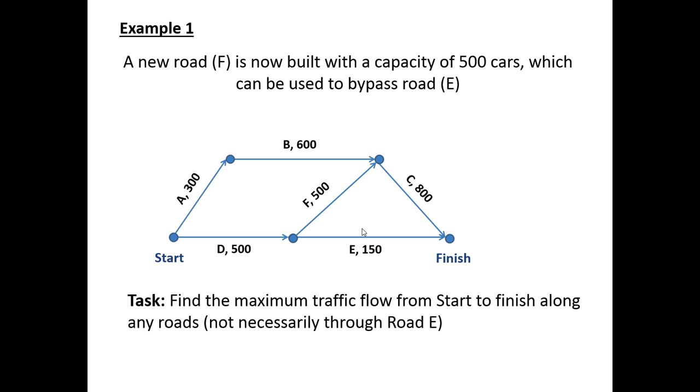A new road F is now built with a capacity of a further 500 cars and that allows us to bypass road E. The task now is to find the maximum traffic flow from start to finish along any of the roads.